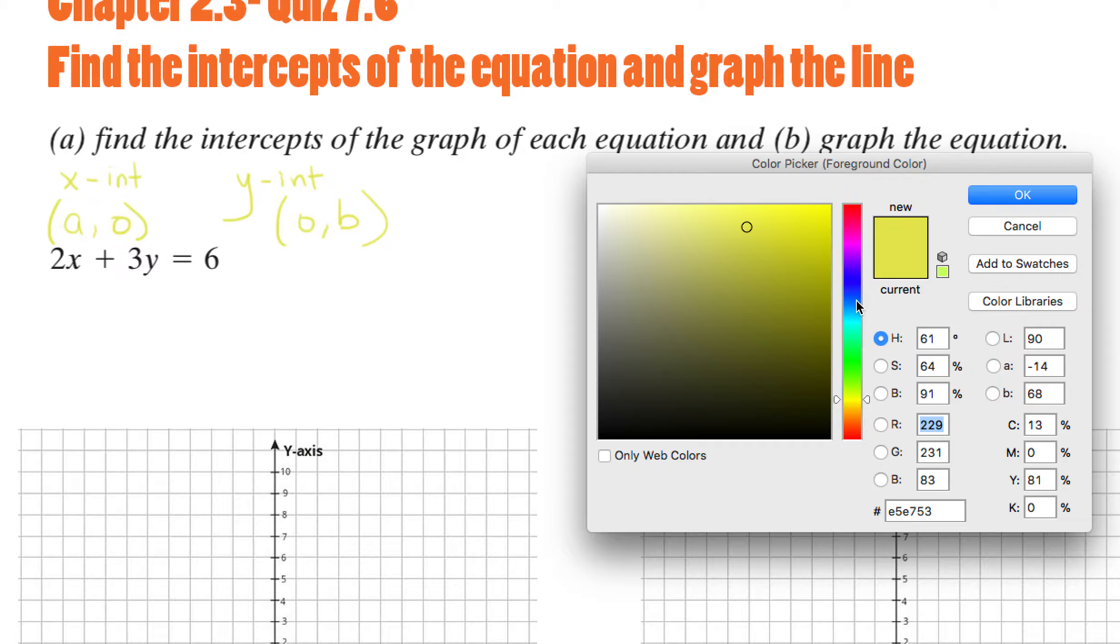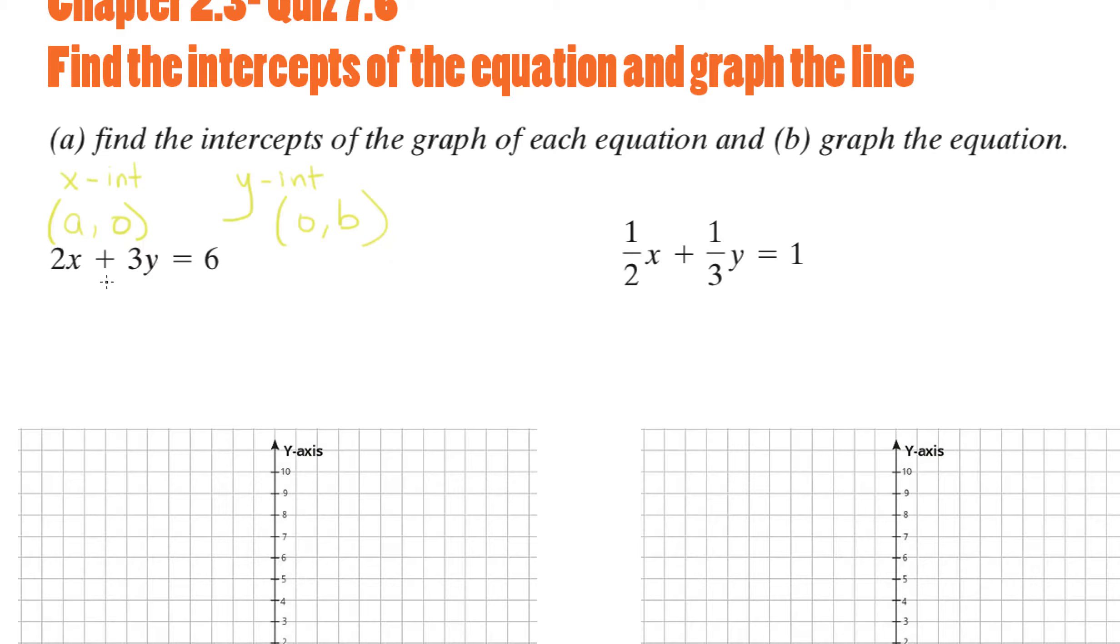For example, let me use a different color. So for the x-intercept, we plug in 0 for y. So you got 2a plus 3 times 0 equals 6. Now why did I substitute a for x? Because I don't want you to get confused with x as being the function x, but in fact being the x-intercept.